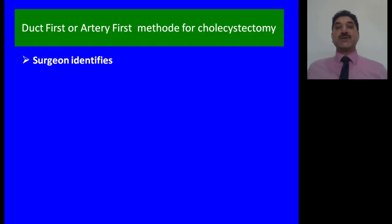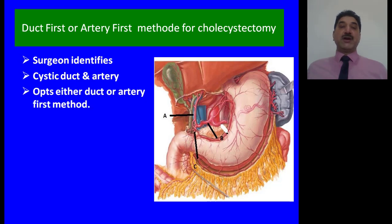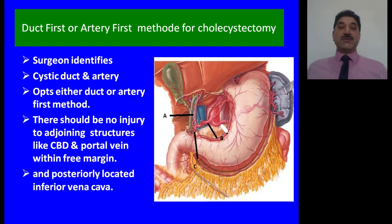Regarding the duct-first or artery-first method for cholecystectomy: during cholecystectomy, the surgeon first identifies the cystic artery and cystic duct. Then he may opt for either the duct-first or artery-first method, but there should be no injury to adjoining structures like the common bile duct and portal vein within the free margin while cutting the cystic artery and cystic duct. The surgeon also takes care of the posteriorly located inferior vena cava.